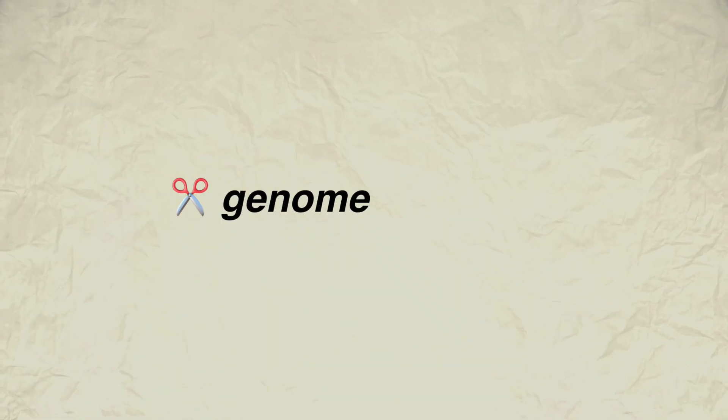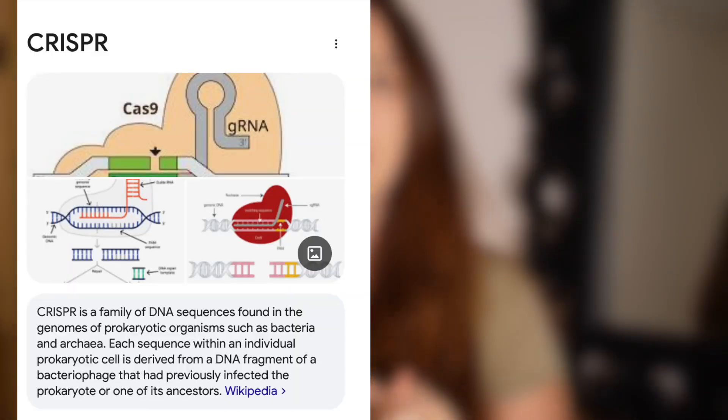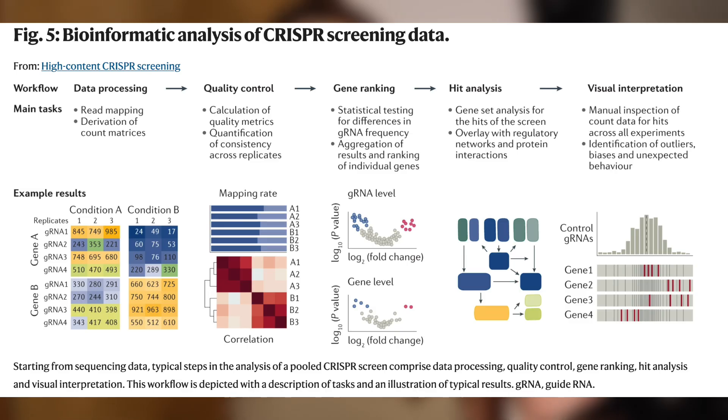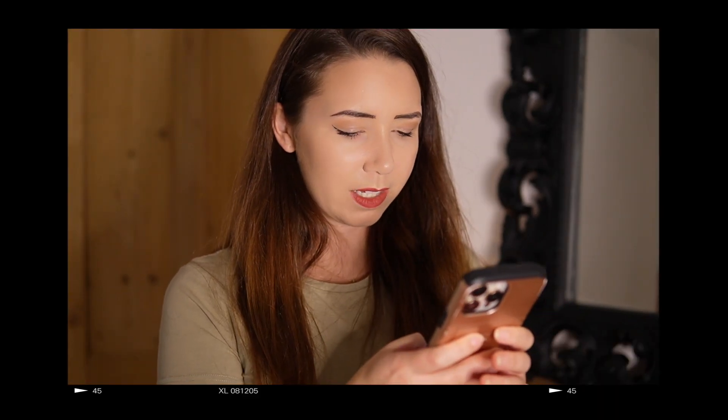Another domain where bioinformaticians can apply their knowledge is in genome editing. Ever since the revolution of CRISPR-Cas9, it's become super easy to go in and change a base, and this means there's loads of analysis that comes out of these experiments. You can do a massive screen — chop, chop, chop — and the bioinformatician needs to analyze what those genetic changes did in the experiment. It's a really huge field, and bioinformaticians are very much needed in the gene editing world.